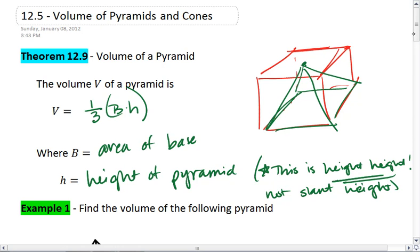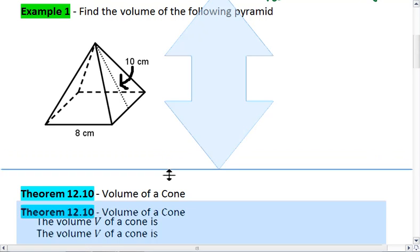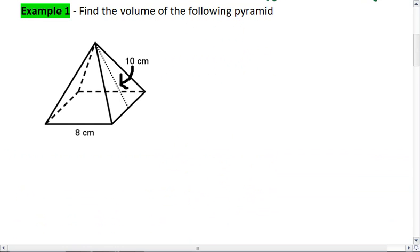Let's look at an example. I want you to find the volume of the following pyramid. Notice, it is a square pyramid and you are given the slant height. Try this on your own first and then resume the video when you're ready to check your solution.